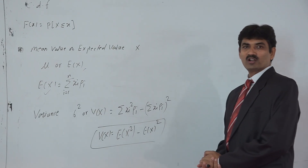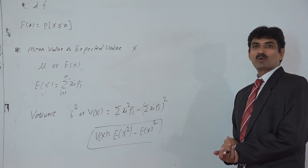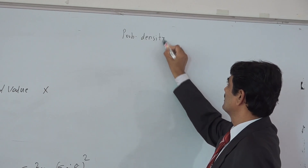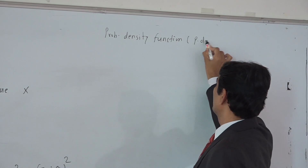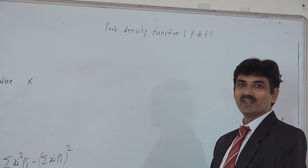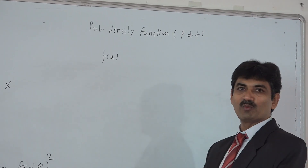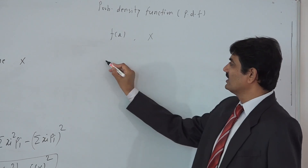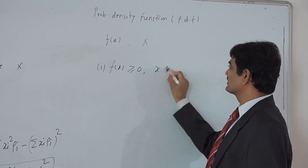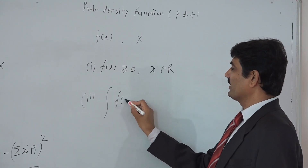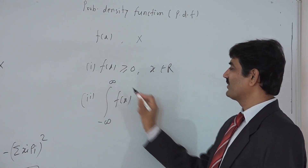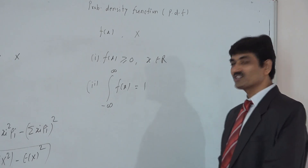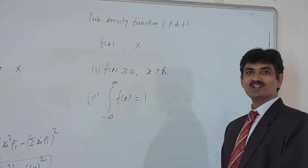If we take the square root of the variance, that is also called the standard deviation. Now we will discuss probability density function, which is an important term associated with continuous random variables. A real-valued function F(x) is said to be a probability density function of a continuous random variable X if it satisfies two main conditions. Number 1: F(x) ≥ 0 for all x ∈ ℝ. And number 2: the integral of F(x) from minus infinity to plus infinity is always equal to 1.